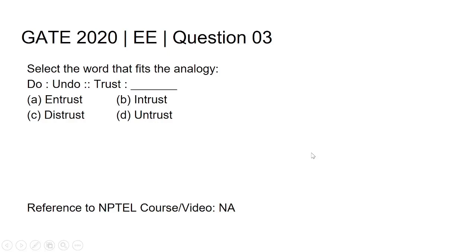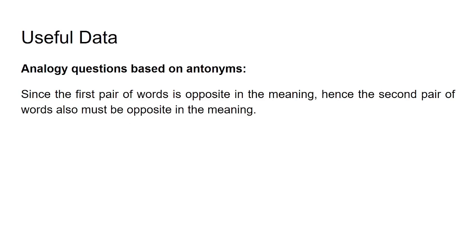Hi all, this is GATE 2020 Electrical Engineering question number three. The question is: select the word that fits the analogy. 'Do is to undo' same as 'trust is to blank.' There are four options: A) entrust, B) entrust, C) distrust, D) untrust. First, I will discuss how to solve such analogy-based questions.